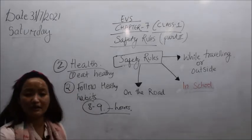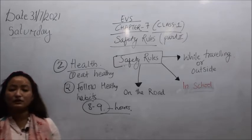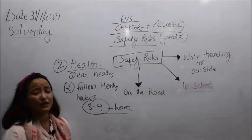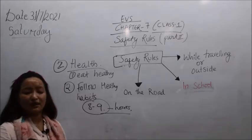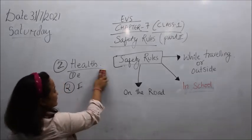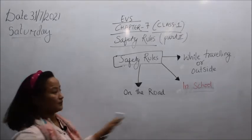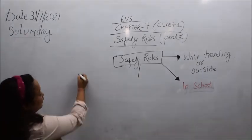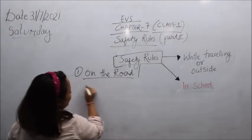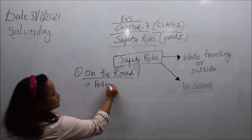Most kids eat junk food or oily snacks like aloo things — they like that and avoid healthy food. Those habits should be avoided to keep yourself healthy. Now, on the road — what do you do on the roadside? You should not play there. We have to follow some basic rules and regulations.